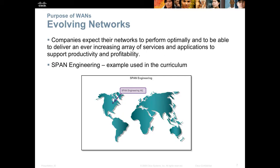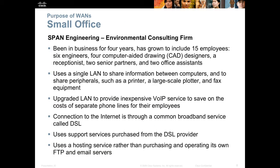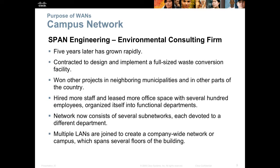Networks have evolved. Companies expect their networks to perform optimally all the time now, because more and more businesses rely on the internet and networks to stay in business. In this chapter, it uses a fictitious company, Span Engineering, an environmental consulting firm, to lay out a rationale for what the company does and their need for WAN connections. Five years on, the company has grown tremendously, and in the labs you get to help Span Engineering upgrade their WAN connections and make choices that will fit their new evolved network.